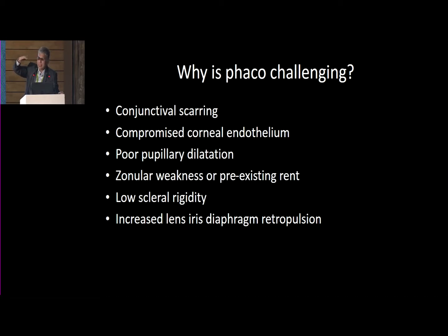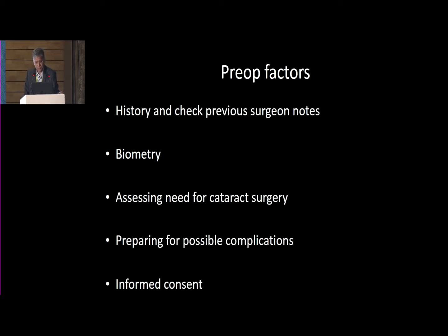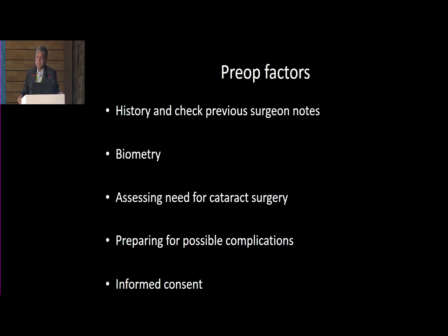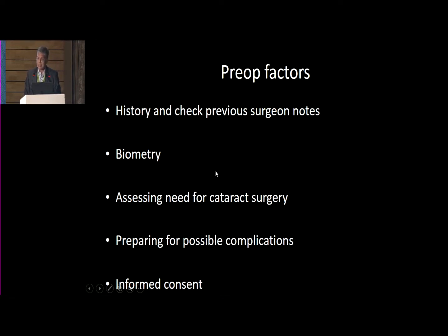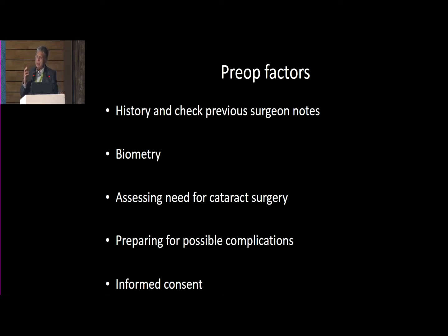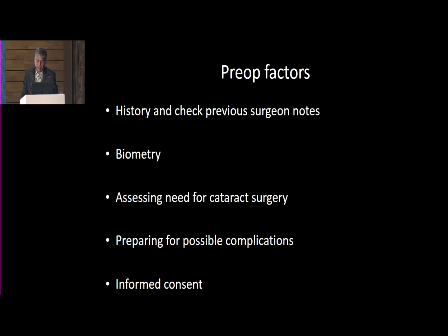When you keep your bottle height up, the lens-iris diaphragm tends to keep swinging — it goes down and comes up as the phaco progresses. For pre-op factors, you have to ask the patient's history and check the previous surgeon's notes, because it would document whether gas or oil was used, how much of a vitrectomy was done, and what the vision of the patient was. Biometry is extremely important. You have to assess the need for cataract surgery, because many of these patients have pre-existing retinal disease, and subtle amounts of nuclear sclerosis may be missed, yet doing the cataract surgery can improve vision dramatically.